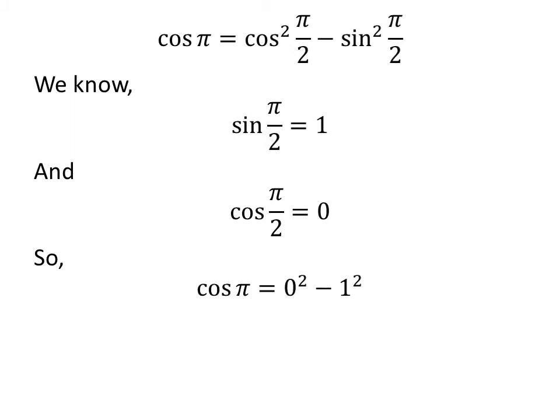So, replacing the value of sine of half of pi and cosine of half of pi in the above expression of cosine of pi gives us cosine of pi is equal to square of 0 minus square of 1.